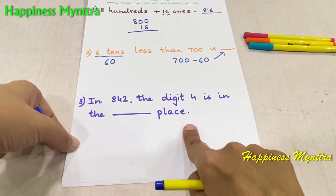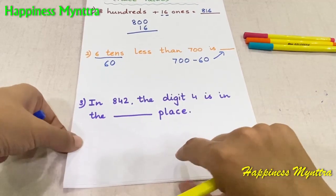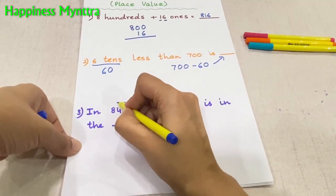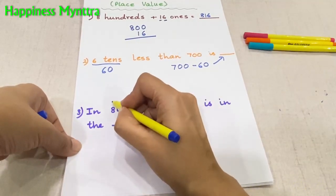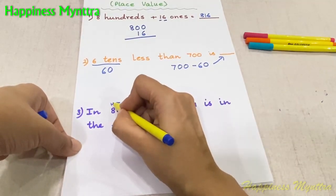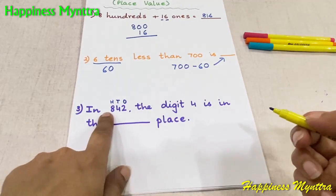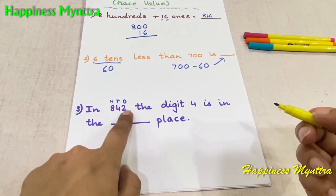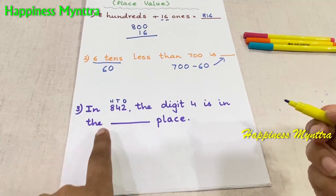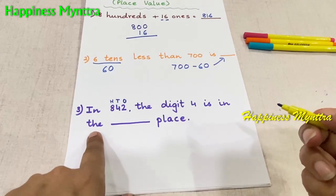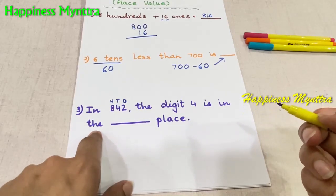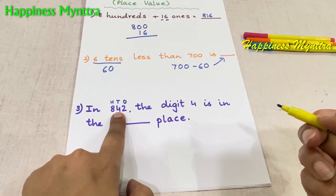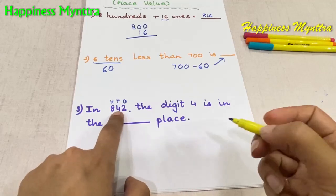In 842, the digit 4 is in the dash place. For place value, we should tell children to write ones, tens, and hundreds on the number. Once each digit has its own place, we can easily find out the place value. So in this case, the answer is tens — 4 is in the tens place.